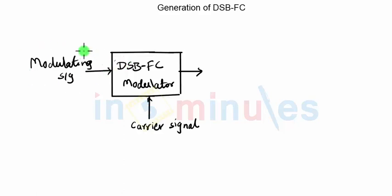One is the modulating signal, which is nothing but the actual information signal that we want to transmit. The modulating signal in our case consists of a single frequency FM. In practice it will be a range of frequencies from 20 Hz to 20 kHz, which we need to translate to some high frequency range, and for that we carry out the process of modulation.